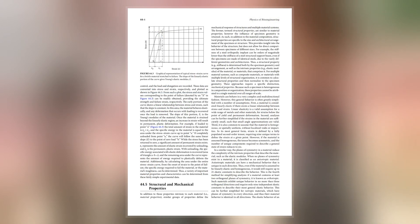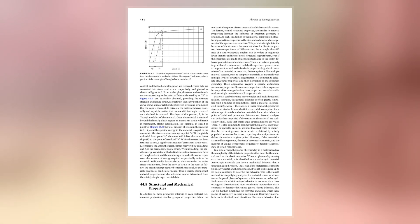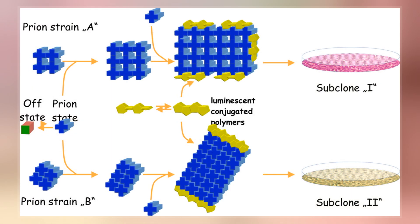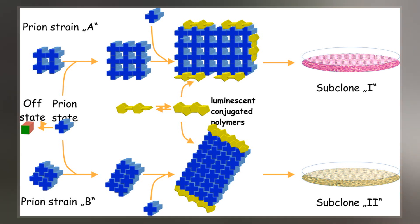This is most easily observed in microbiology, where strains are derived from a single cell colony and are typically quarantined by the physical constraints of a Petri dish.